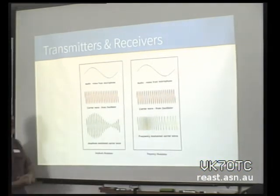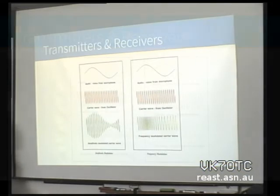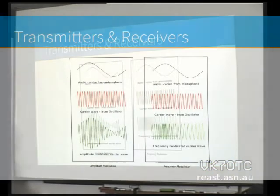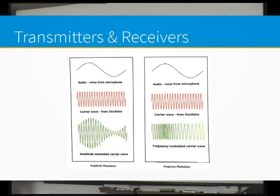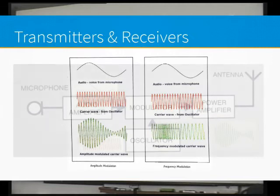That's a good representation of the difference. Amplitude modulation looks like this — the amplitude varies. Frequency modulation looks like this — the amplitude stays exactly the same, but the frequency changes, just slightly.